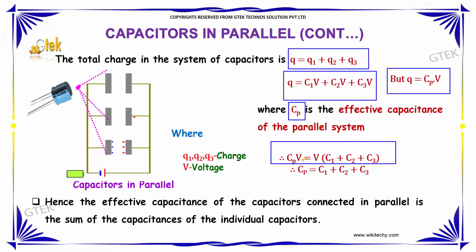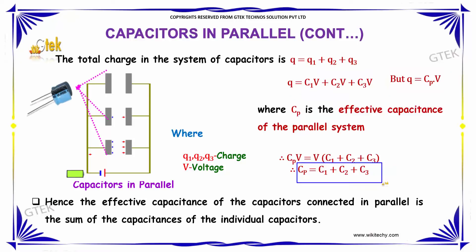Since V is common on both sides, we can cancel it. Therefore, Cp = C1 + C2 + C3. Hence, the effective capacitance of capacitors connected in parallel is the sum of the individual capacitances. Thanks for tuning in.